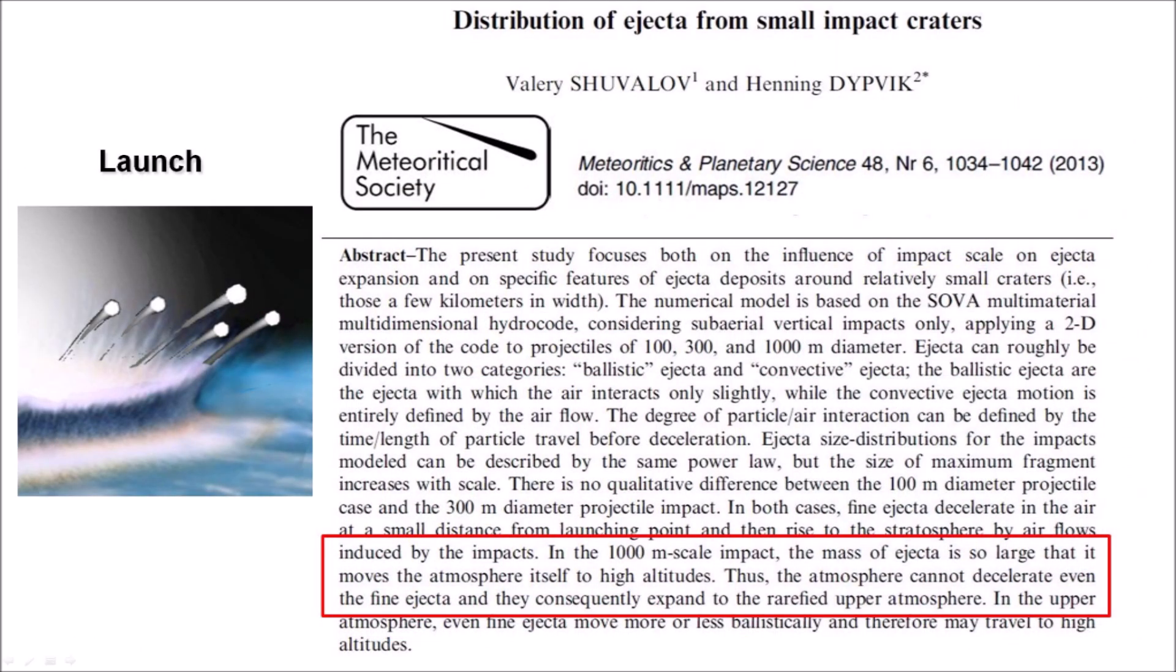A paper by Shuvalov and Dypvik describes extraterrestrial impacts by projectiles of various sizes. For a projectile with a diameter of 1000 meters, the mass of ejecta is so large that it moves the atmosphere itself to high altitudes. Thus, the atmosphere cannot decelerate even the fine ejecta and they consequently expand to the rarefied upper atmosphere. This means that the ice boulders that were ejected by the impact on the Laurentide ice sheet were able to start their ballistic trajectories without significant ablation or melting from atmospheric friction because the ice boulders were lifted along with the atmosphere due to the large size of the impact.